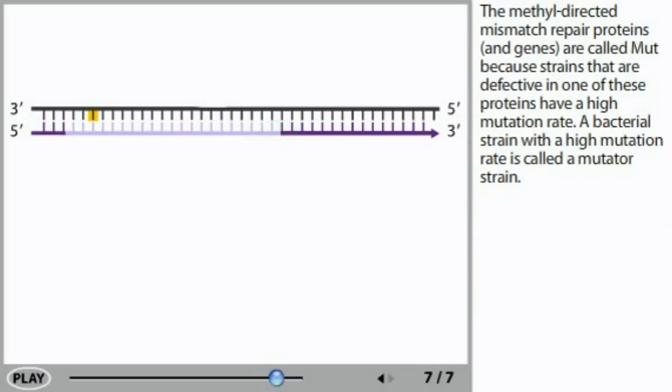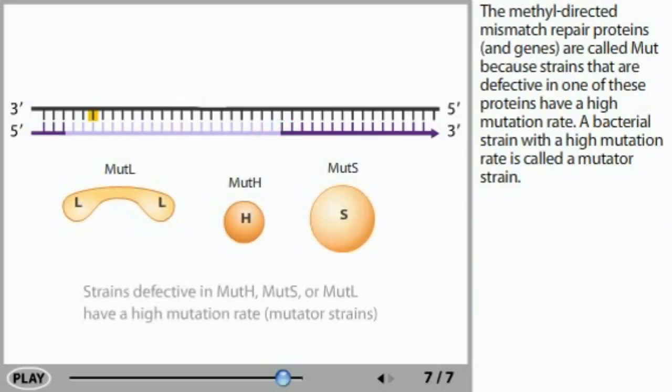The methyl-directed mismatch repair proteins and genes are called Mut because strains that are defective in one of these proteins have a high mutation rate. A bacterial strain with a high mutation rate is called a mutator strain.